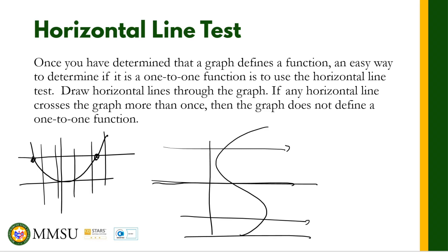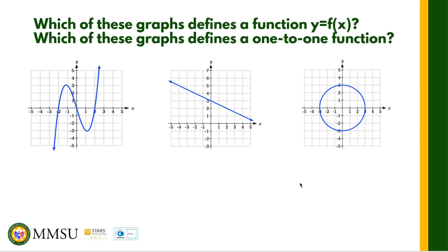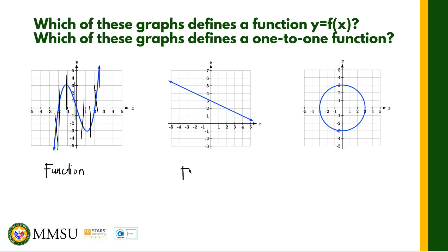Let us look at the following examples: which of these graphs define a function y equals f of x, and which defines a one-to-one function? Using the vertical line test on the first graph — if we draw a vertical line at any part of the graph it only intersects at one point, so this is a function. The second graph is a line, so it is also a function.